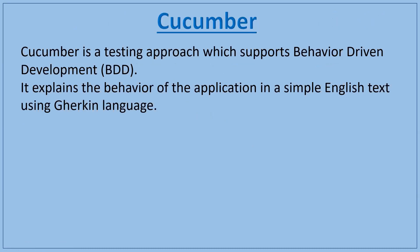Now we come to Cucumber. BDD is a technique, and to use this technique you need a tool or framework. Cucumber is actually a testing approach which supports BDD. If you want to implement BDD, you take the help of any BDD-supported tool or framework. Cucumber is a tool which supports BDD. In Cucumber, you write test cases in simple English language using specific keywords, and those keywords are written in Gherkin language.